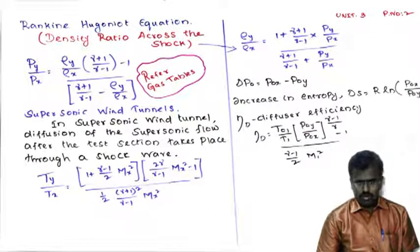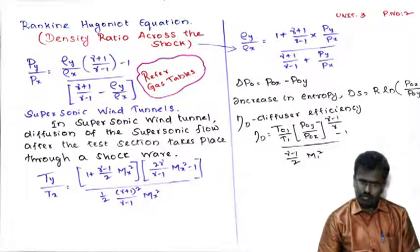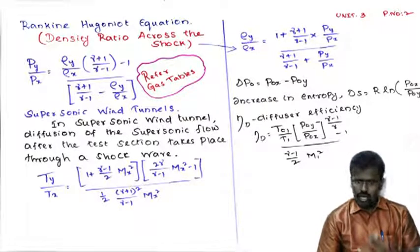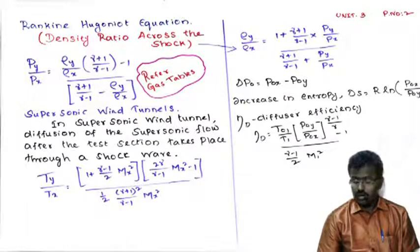Next is one important equation called the Rankine-Hugoniot equation, which gives the density ratio across the shock: ρy/ρx. In the supersonic wind tunnel, diffusion of supersonic flow after the test section takes place through the shockwaves. We also use the temperature ratio ty/tx and the pressure ratio py/px, called the pressure ratio across the shock, and ρy/ρx, the density ratio across the shock.